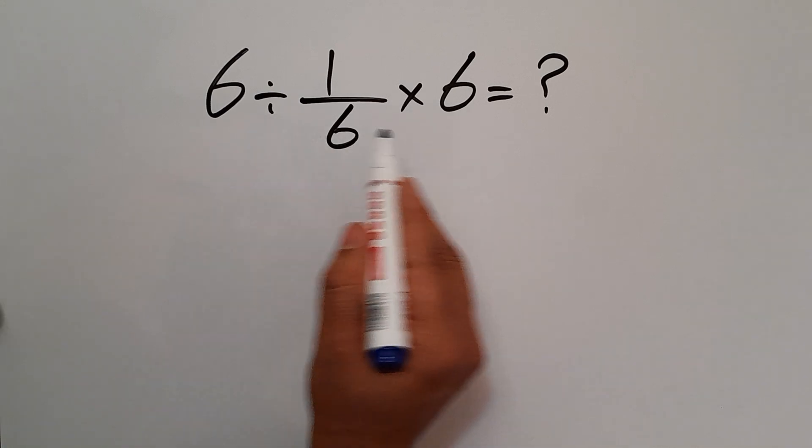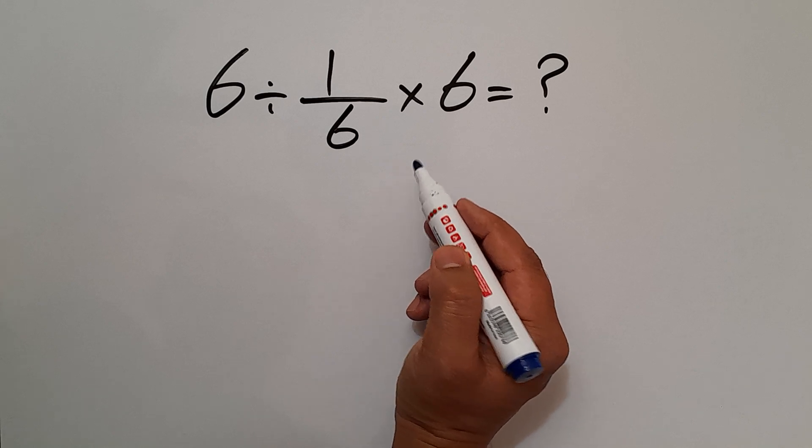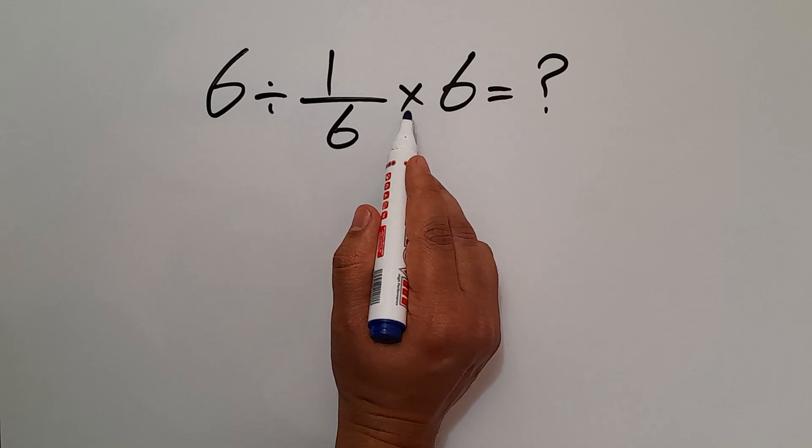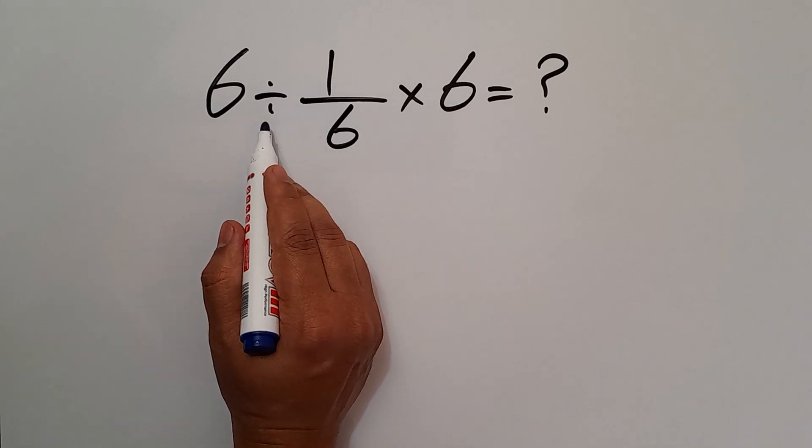Looking at this expression, we have one division and one multiplication. According to the order of operations, multiplication and division have equal priority and we have to work from left to right.